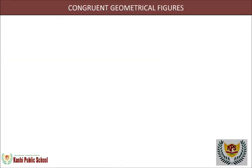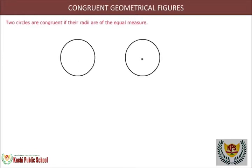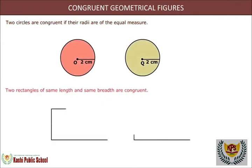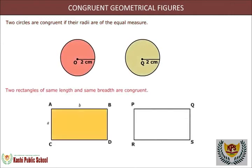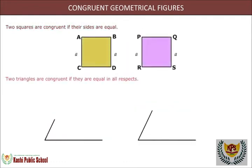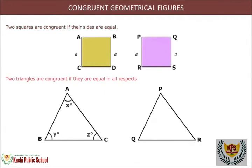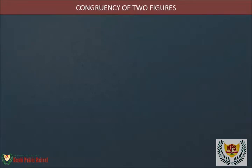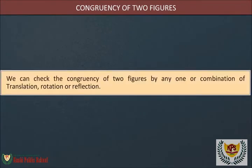Congruent geometrical figures: two circles are congruent if their radii are of equal measure. Two rectangles of the same length and same breadth are congruent. Two squares are congruent if their sides are equal. Two triangles are congruent if they are equal in all respects. We can check the congruency of two figures by any one or combination of the following transformations.